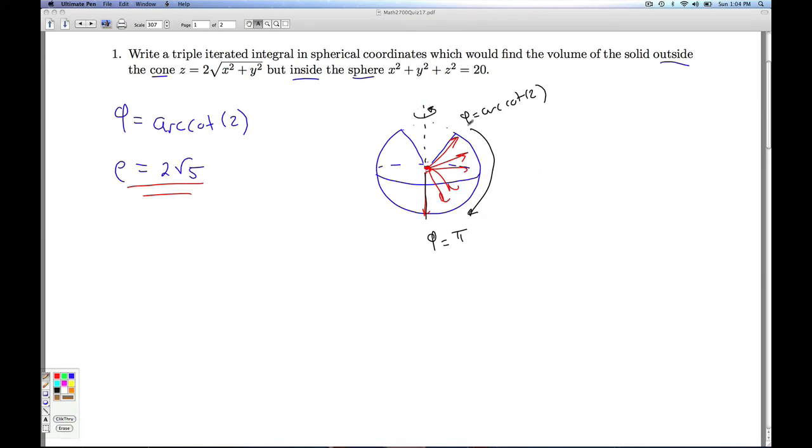And of course, theta being theta, since this thing has symmetry about the z-axis here, the theta is just going to go from 0 to 2 pi. And so finally, we get our volume. Theta goes from 0 to 2 pi. Phi goes from arc cotangent of 2 to pi. Rho goes from 0 to 2 square root 5. And we need the volume differential. It's rho squared sine phi d rho d phi d theta.